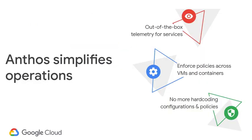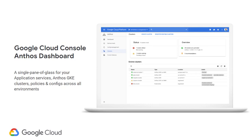Anthos simplifies operations because behind the scenes, via the service mesh, it gives you out-of-the-box telemetry for different services — multiple metrics, the golden signals, and different SLOs you may have, straight off the bat. Since you have a single plane of control and are using Anthos Config Management, you can now enforce policies straight away from the single control plane itself without depending upon special configuration in each area. This single control plane of glass runs in GCP and gives you a single view of all the clusters that Anthos is managing.